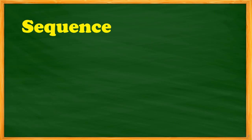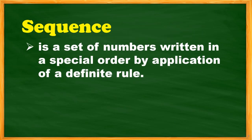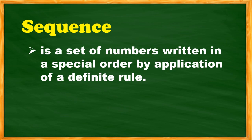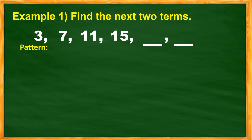Now let's discuss the sequence. A sequence is a set of numbers written in a special order by application of a definite rule — like adding 2 to the preceding number, adding 3, or multiplying by 2 to the preceding numbers.